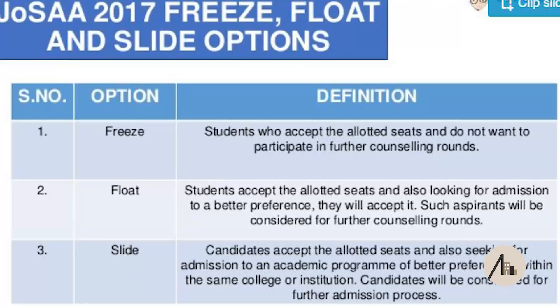The third option is slide. Since this is the first time JEE Mains Paper 2 and Paper 3 are separated, if you have given only Paper 2 you have only one program, which is B.Arch — you won't be choosing B.Planning. Slide is for people who want admission in a college but would move to a better branch within the same college. There is no point considering slide this time, since you will only be going for B.Arch colleges with only one program.